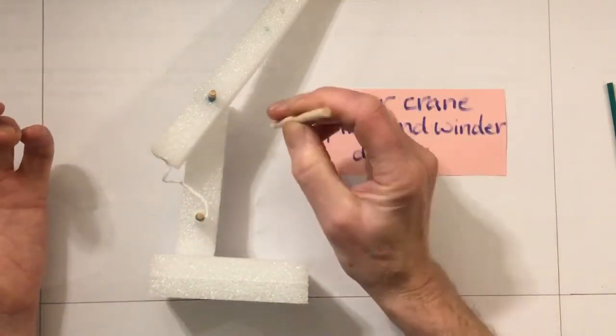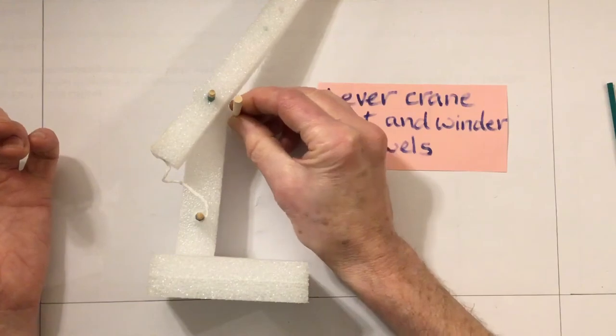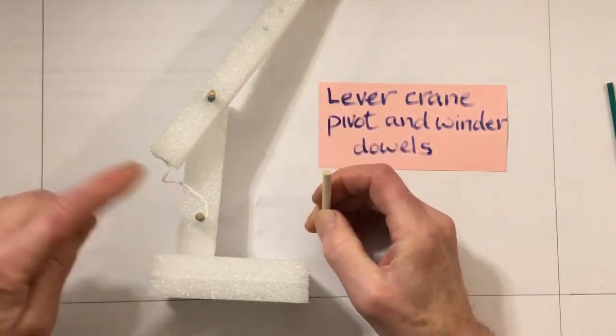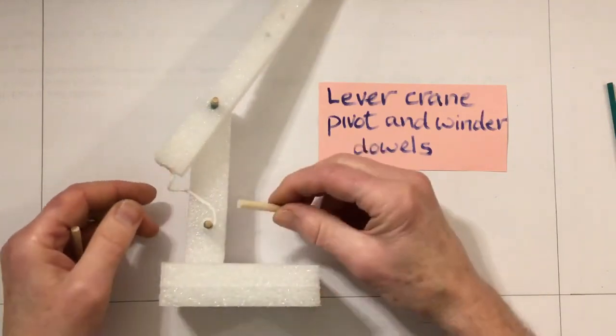The shorter one is for the winder - sorry, the shorter one is for the pivot.